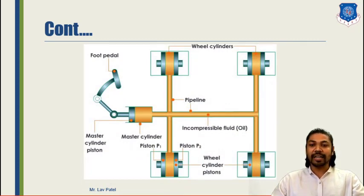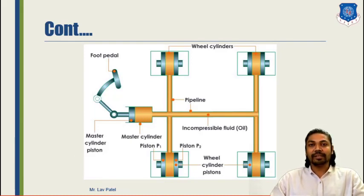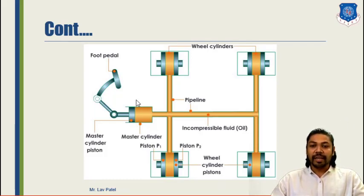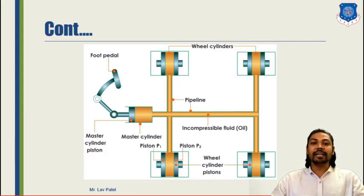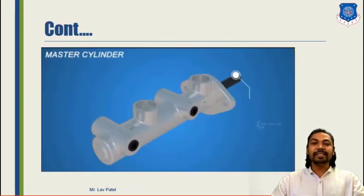Moving further, talking about hydraulic brakes — this is a basic diagram of a hydraulic brake in which you can see that a foot pedal is there. By using the foot pedal, from the master cylinder the oil gets compressed. Generally we are using non-compressible fluid or oil for the braking system. From the master cylinder, that oil goes to the individual wheel cylinder, and with the help of compressed oil the wheel cylinder gets extracted and the brake is applied.